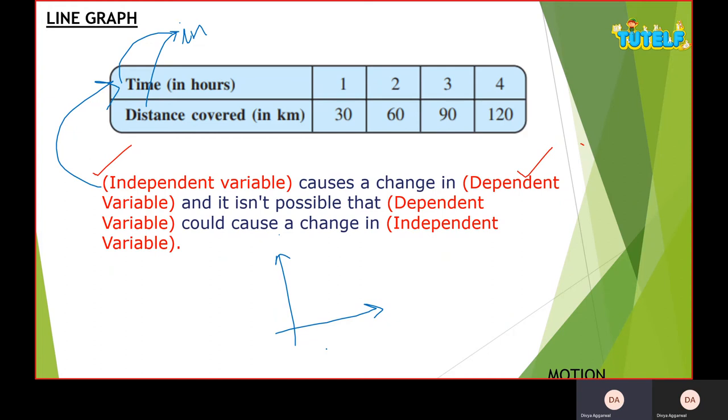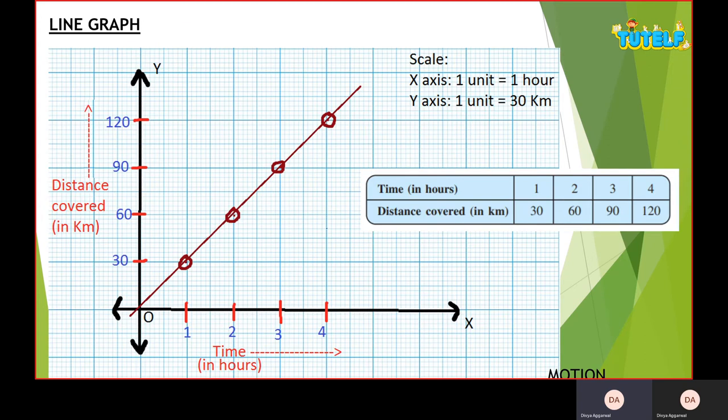Let's do a quick recap of this line graph. On the top right you can see the scaling - one unit, this one whole block, represents my one unit. This is a square as you can see, and this one square is one unit. My x-axis of the square represents one hour and my y represents 30 kilometers.